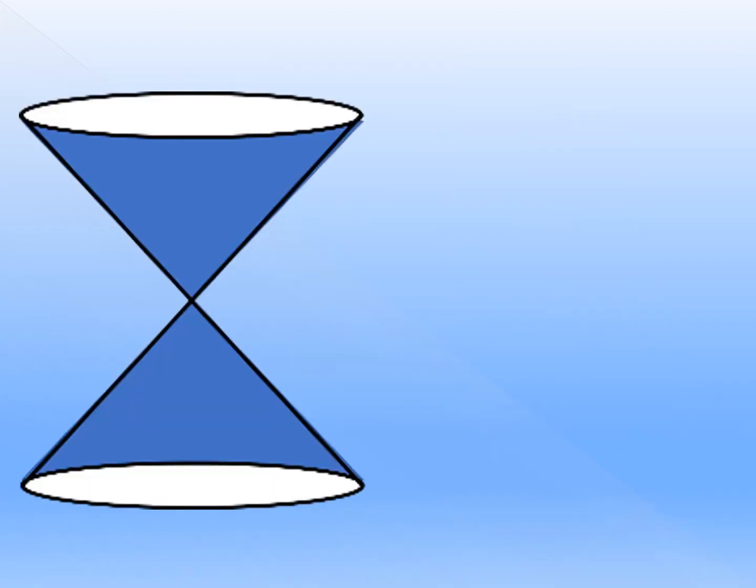This is what we call a double nappe cone. Imagine that you have two ice cream cones and you are connecting their vertex. From that, you can now imagine that you have a double nappe cone.